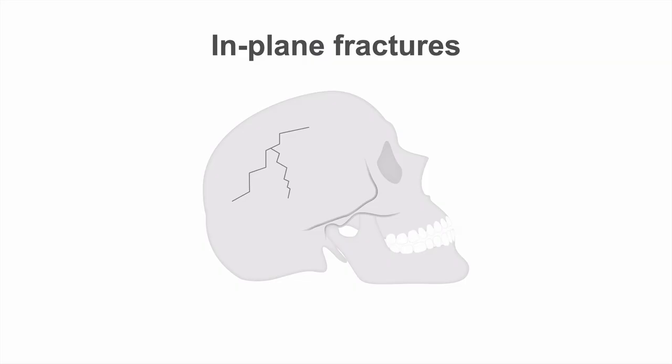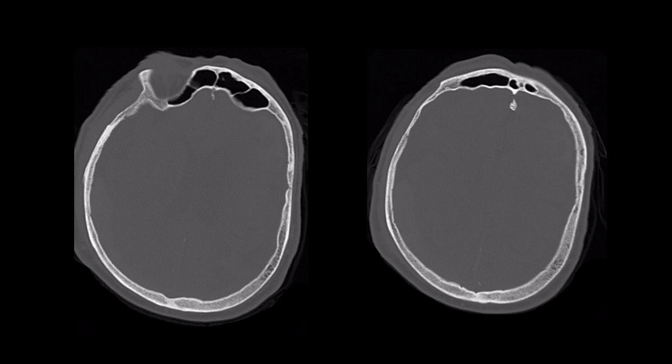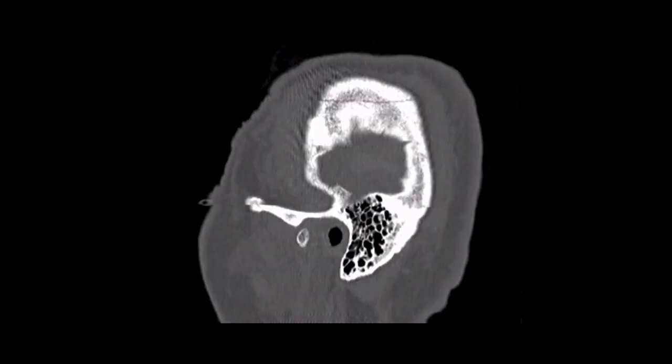When the fracture line runs in the same plane as the reconstruction, it can be very difficult for the imager to perceive the fracture. For example, this fracture is at the limit of perception on axial views in this trauma patient, but it is quite evident on the sagittal reconstruction of the same data.